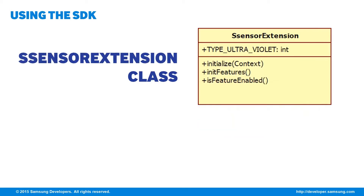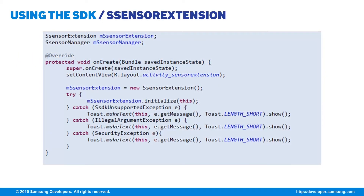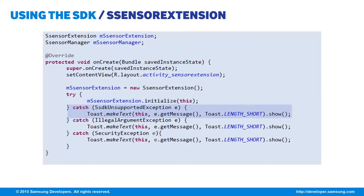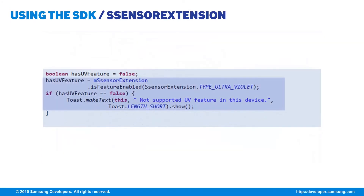Next we have the SensorExtension class, primarily used for initializing the SDK and checking features. Once you instantiate a new object of SensorExtension, you must call the initialize method with the context as parameter. If a device is not supported, the SSDK unsupported exception is thrown. In our example, we have msSensorExtension as our SensorExtension object. After initializing and getting no exceptions, you should check for the supported features by calling the isFeatureEnabled function, which accepts an integer type defined in the SensorExtension class. The boolean hasUV gets the return value and shows a toast message if the ultraviolet sensor feature is not supported.